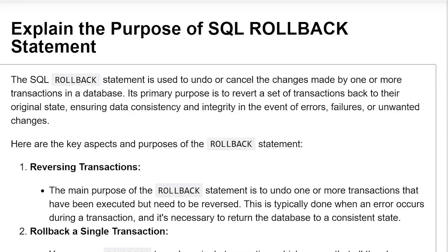Explain the purpose of the SQL Rollback Statement. The SQL Rollback Statement is used to undo or cancel the changes made by one or more transactions in a database. Its primary purpose is to revert a set of transactions back to their original state, ensuring data consistency and integrity in the event of error, failure, and unwanted changes. Here are the key aspects and purpose of the Rollback Statement.